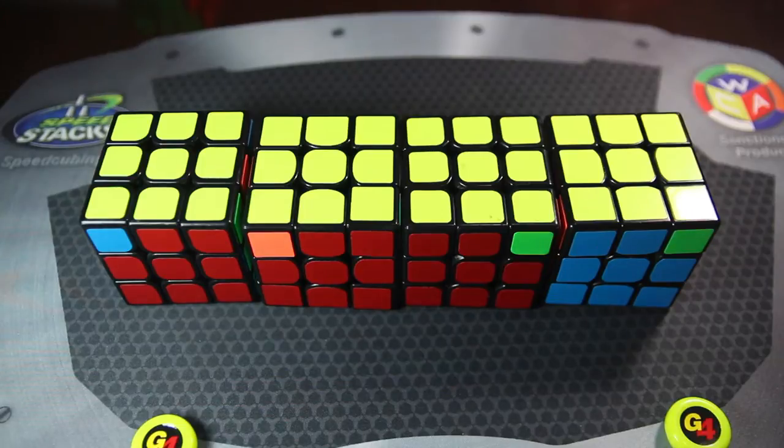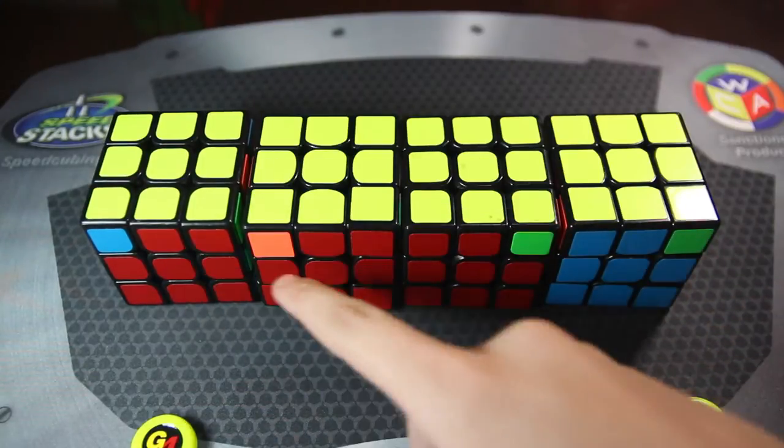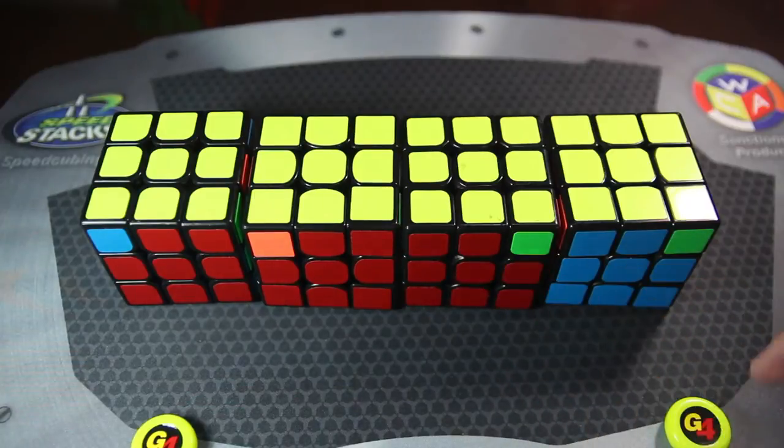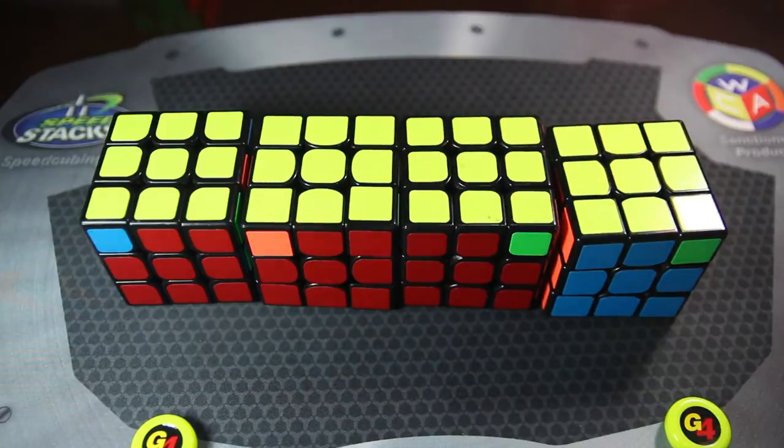All G-perms have a block. So a block is two pieces next to each other like this. All the G-perms have this block and all the other sides there's no blocks. So all you have to do is find that block and then we'll go to the next step.